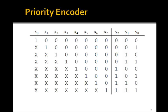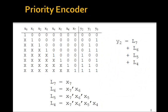So the question is, how can we write the logic equations for this priority encoder? Well, it's similar to what we had before, except that y2, we say, is equal to L7 or L6 or L5 or L4. That is, it's these possibilities. But in this case, L7 is just x7.